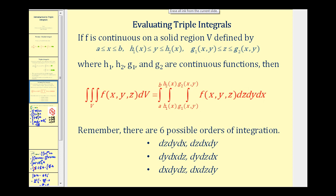There are a couple of things to mention first. If f is continuous on a solid region V defined by x, y, and z, and h1, h2, g1, and g2 are all continuous functions, then the triple integral over V of f(x, y, z) with respect to V can be expressed as an iterated integral where we integrate with respect to z first, then y, then x. The limits of the innermost integral must be functions of x and y, the limits for y must be functions of x, and the limits for x would be constants.